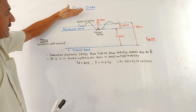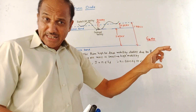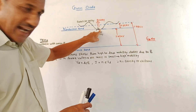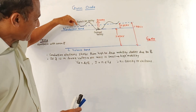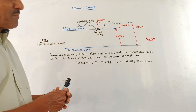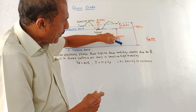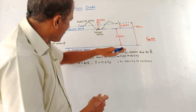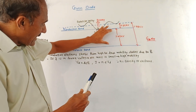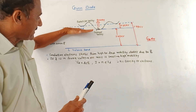Above the valence band border line is the conduction band. In the conduction band, there are different valleys. We are interested in two valleys: one is called the Central Valley, and the other is called the Satellite Valley. The Central Valley is at 1.43 eV from the valence band, and the conduction band starts from that point — the Central Valley.